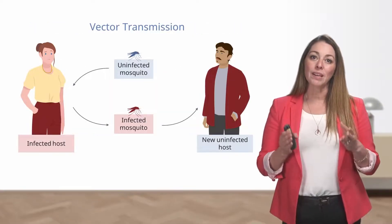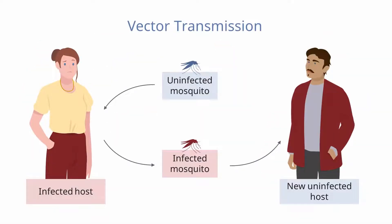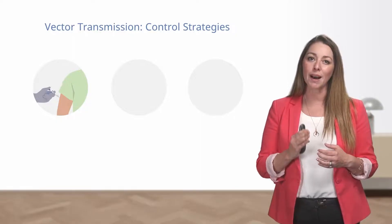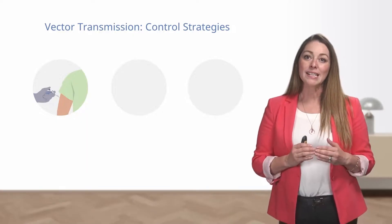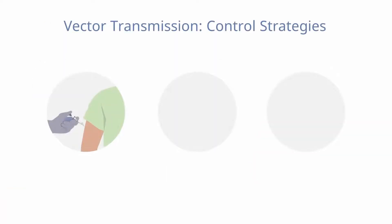Vector-borne illnesses are spread when an infected individual transmits the disease to a vector, which then transmits it to another individual. However, without the vector, the individuals are not able to transmit disease to each other. Of all infectious diseases, vector-borne illnesses are the most complex to prevent and control. Control strategies typically involve community education and environmental measures to hinder the vector from reaching its host — for example, strategies against malaria, transmitted through mosquitoes, include vaccinations and environmental measures such as mosquito nets or eliminating standing water.